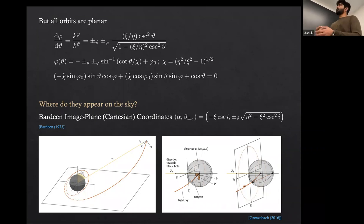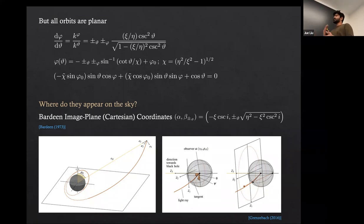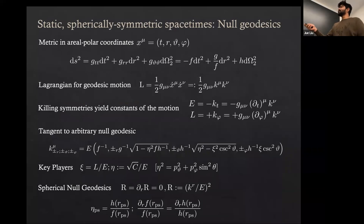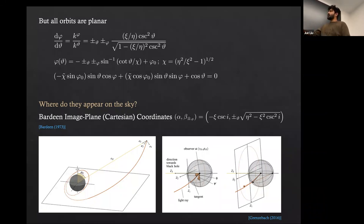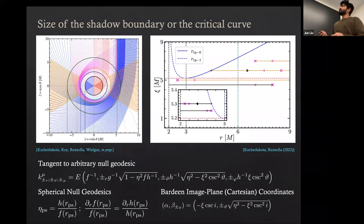All orbits are planar and essentially copies of each other, so we can look at orbits with ξ equal to zero — photons that don't move in the φ direction, i.e., meridional planes. From the equation, this photon arrives on the sky at (0, √η). So η is also called the apparent impact parameter — it tells you how far from the principal null congruence at the observer's location the photon will appear. Now let me define what the shadow boundary is.